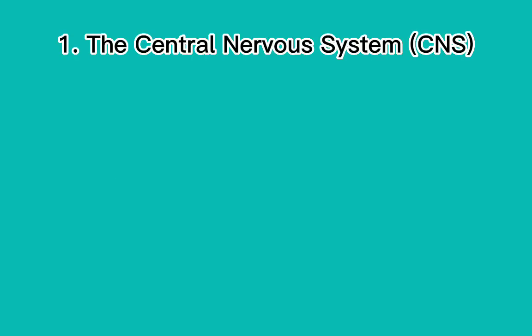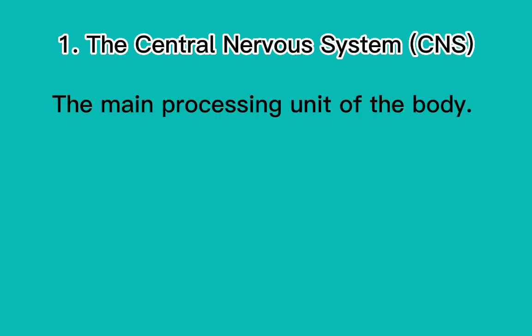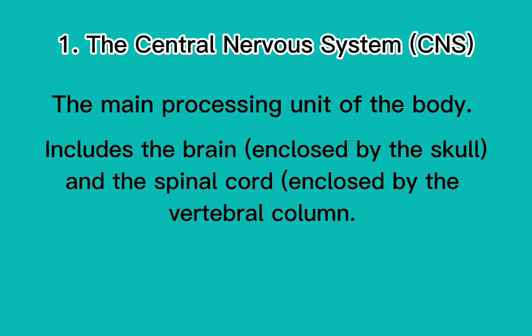Division of the Nervous System: 1. The Central Nervous System (CNS) is the main processing unit of the body. It includes the brain, enclosed by the skull, and the spinal cord, enclosed by the vertebral column.